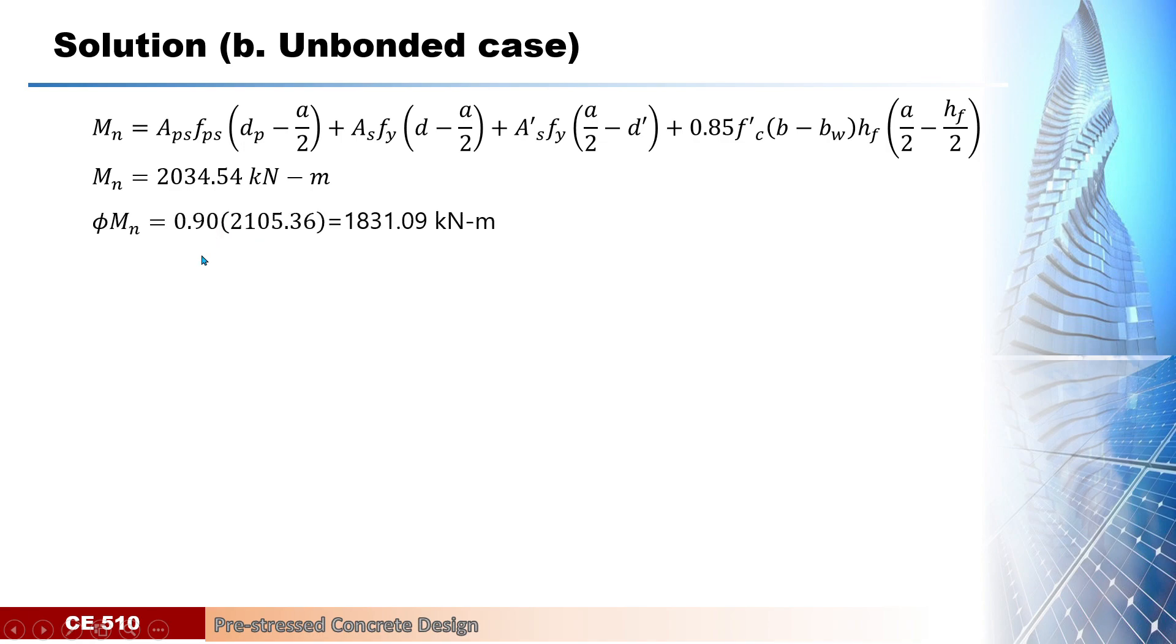Ultimately, the ultimate moment capacity, multiplying this nominal by phi, that is 0.9, we got now the ultimate moment capacity of the beam as 1831 kilonewton-meters.